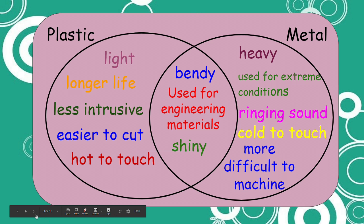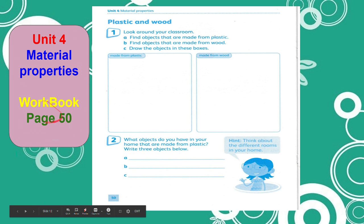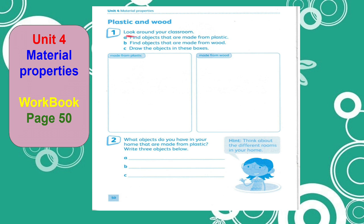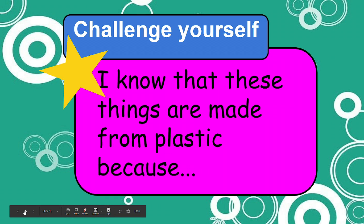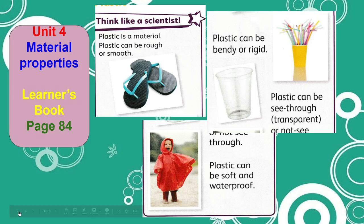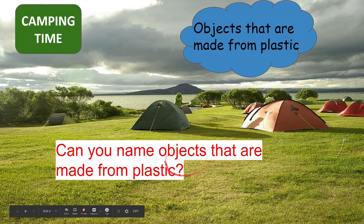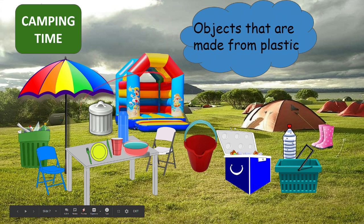Now let's complete our workbook page 50. Find plastic objects that you can find in your classroom, or now that you are at home, try to find objects that are made from plastic. Draw in the first box all the objects that are made from plastic. In number two, write down the names of objects in your home that are made from plastic. Plastic is everywhere — you can find a lot of plastic materials not just in your home, not just in your classroom, but everywhere. Think about the different rooms in your house when you think of plastic materials.